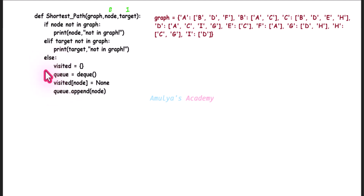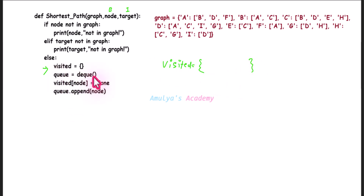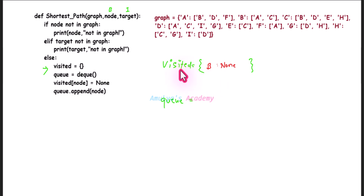In the else block the first statement is visited — so let's create a visited dictionary. Next, queue — create a queue. Next, visited of node is set to None, so we take the starting node B, mark it as visited, and its parent node is None. Then queue dot append node — append B to the queue.